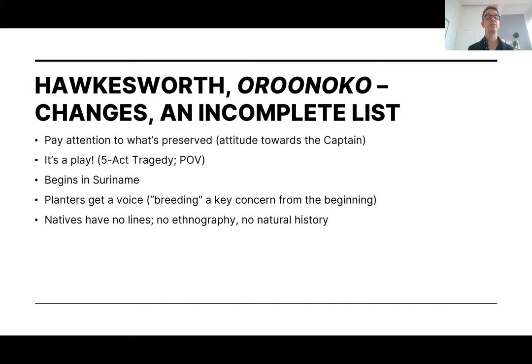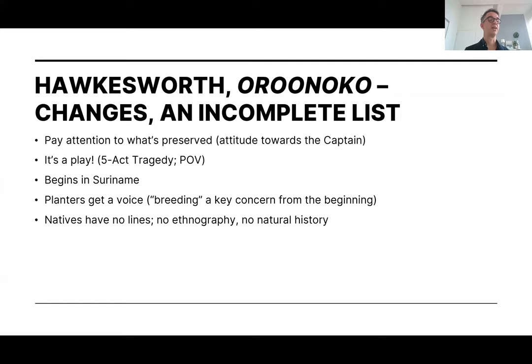The Native Americans, who are very important in Behn's novel, here have no lines at all. They're simply a dangerous, mysterious force that shows up at one point and tries to run away with all the enslaved Africans, and then they're defeated by Oroonoko and they leave. That's the last we see of them. So there's no ethnography, no description of their customs, no natural history, no sense that Suriname is a particular kind of place. We can talk about why Hawksworth's play does this — what's maybe happening in the mid-18th century that makes this text so much more reluctant to represent Natives on stage compared to how Behn does it.